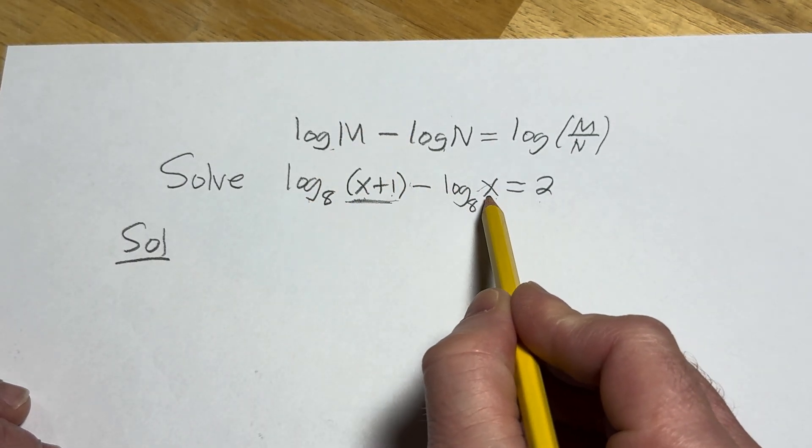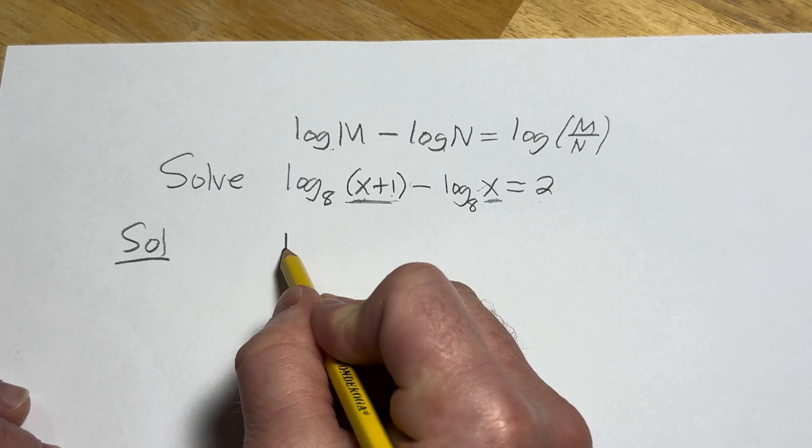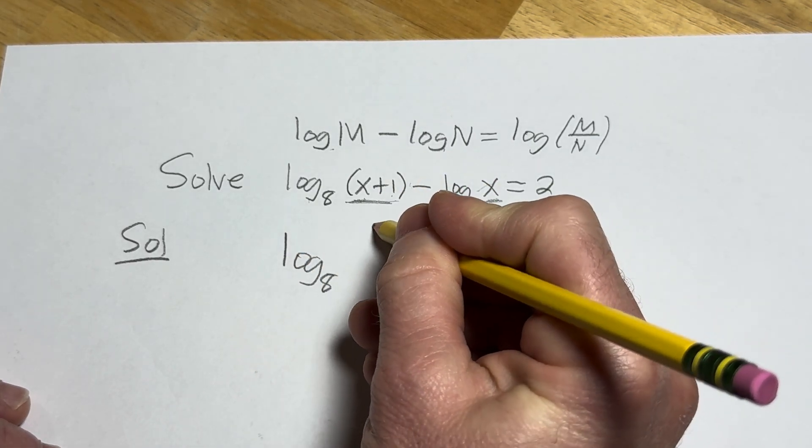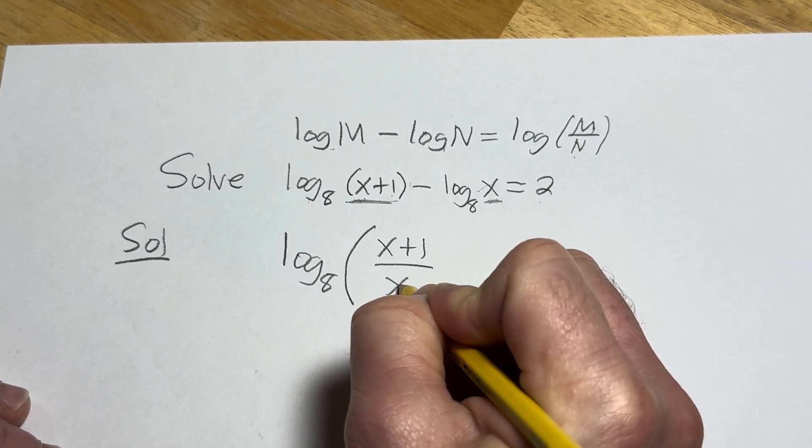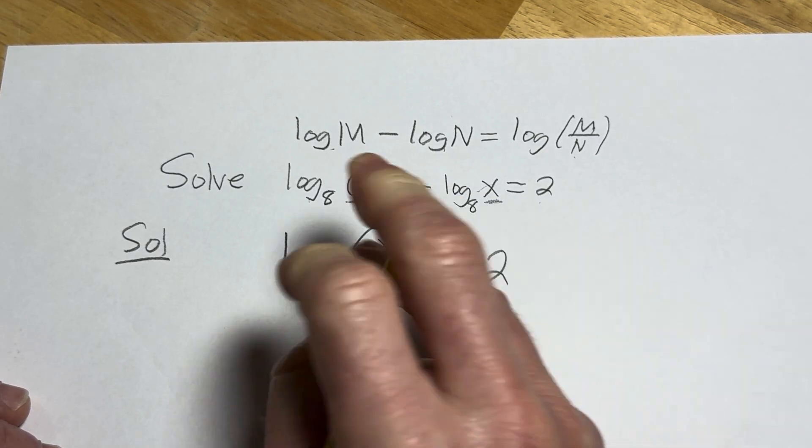So this is our m and this is our n. So this will be the log base 8 of, so it's m over n, so it's x plus 1 over x, and that's equal to 2. Beautiful stuff.